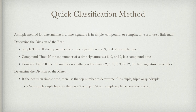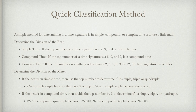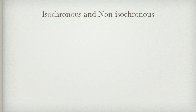For compound time, divide the top number by 3: 12/4 is compound quadruple because 12 divided by 3 is 4; 9/8 is compound triple because 9 divided by 3 is 3. That concludes the basic review of simple, compound, and complex time signatures. If you need more information, there is another lecture in the Music 102 series available on YouTube, in Unit 3, covering how to identify all these time signature types.